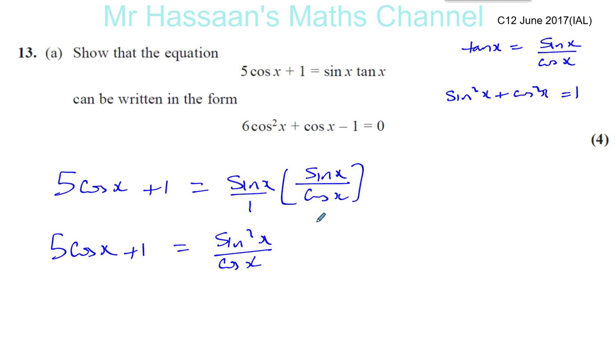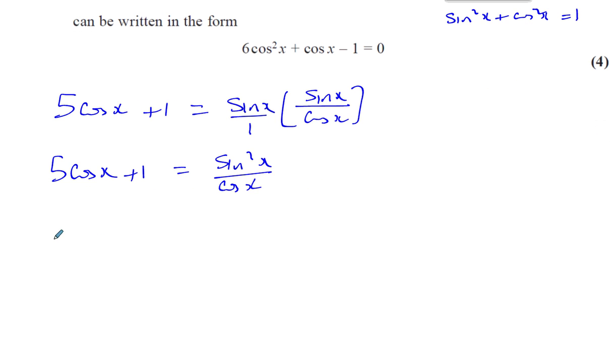Now what I can do is multiply both sides by cosine x to get rid of this fraction. So we're left with 5 cosine squared x plus cosine x equals sine squared x. So now we're kind of getting somewhere.